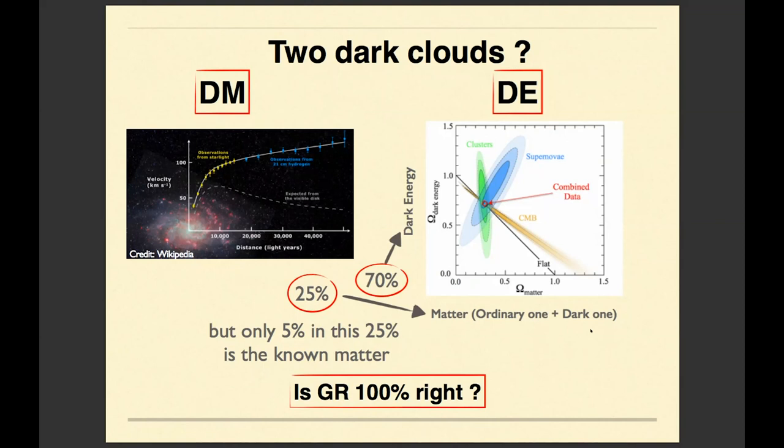And this dark energy amounts to 70% of the universe content. It means that in the universe there's 70% of dark energy and 30% of matter. I'm sorry, I forgot how to add numbers. But only five percent of this 30 percent of matter is actually the real visible matter.